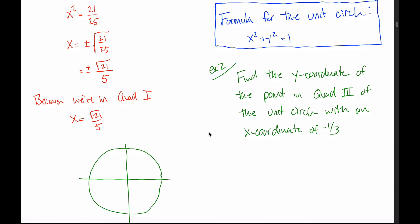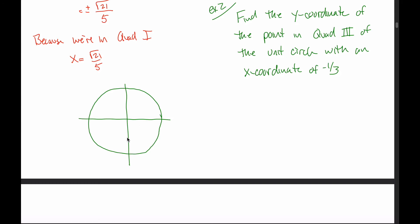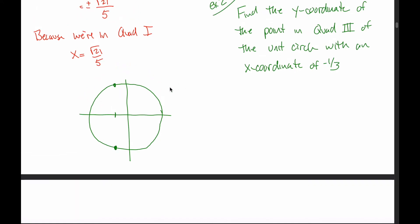Here's another example: find the y-coordinate of the point in the third quadrant of the unit circle that has an x-coordinate of negative 1 third. The x-coordinate is negative, so we're to the left of center. There are two points on the unit circle with this x-coordinate — one above and one below — but we're told it's in the third quadrant, meaning both coordinates are negative. Using the same formula: (-1/3)² + y² = 1.